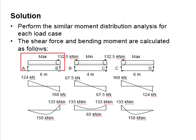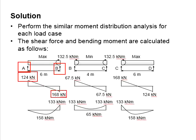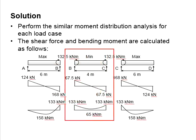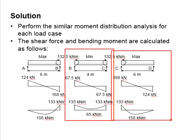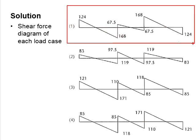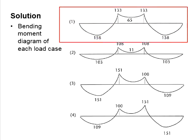For further analysis, each segment can be separated so that reactions can be found. From the reactions, the shear force diagram can be determined, and from the shear force diagram the bending moment can be obtained. The moment at the support is taken from the moment distribution table. The same calculation steps are conducted on the second and third segments of the beam, giving the shear force and bending moment diagrams.